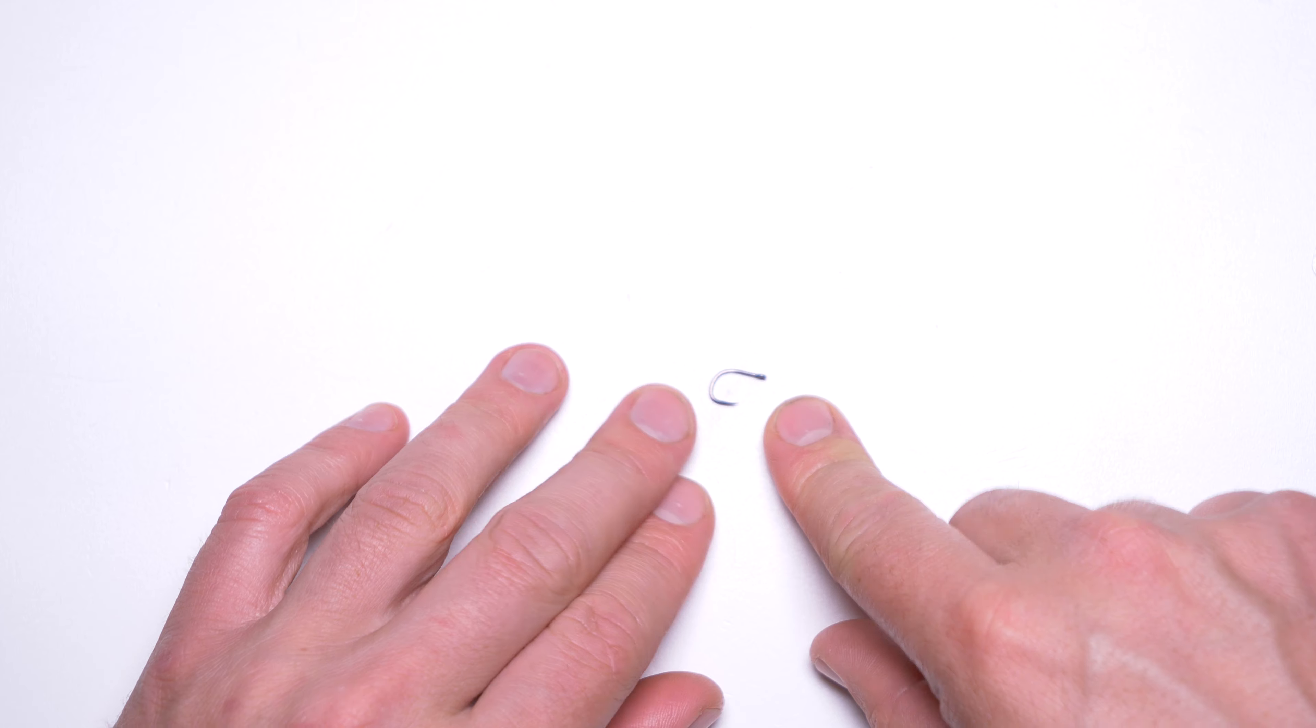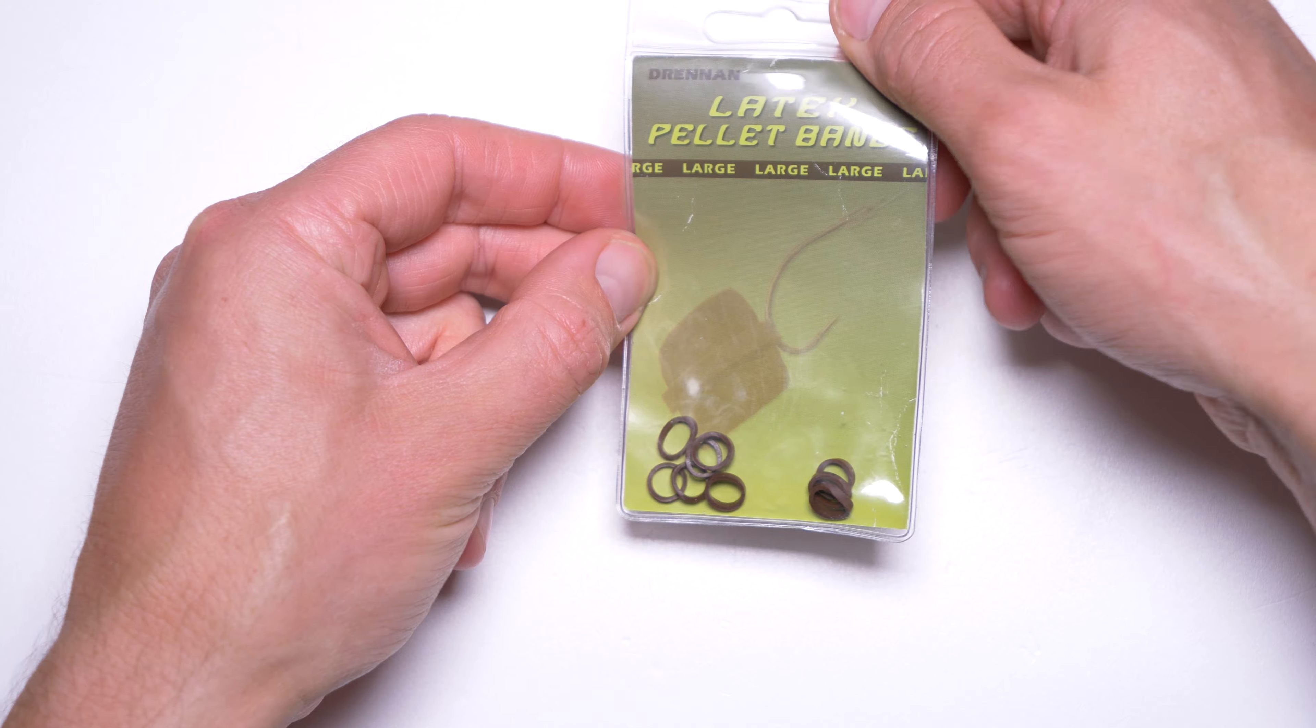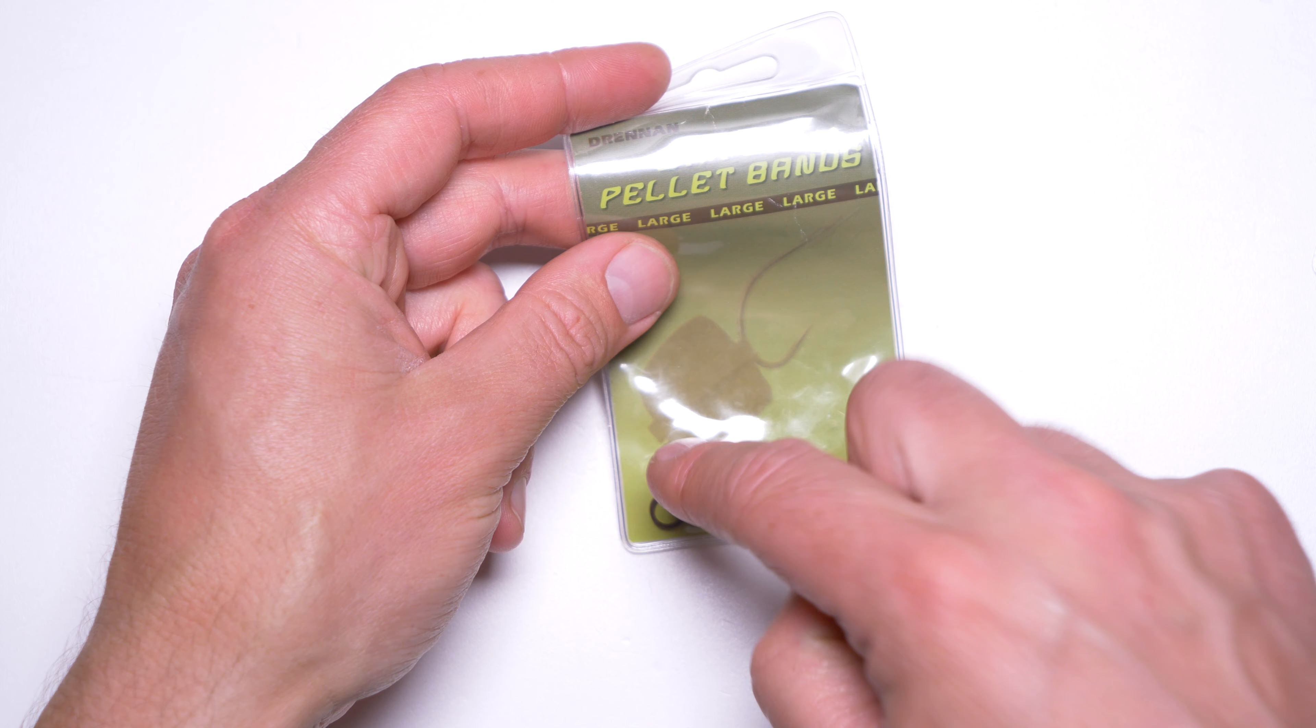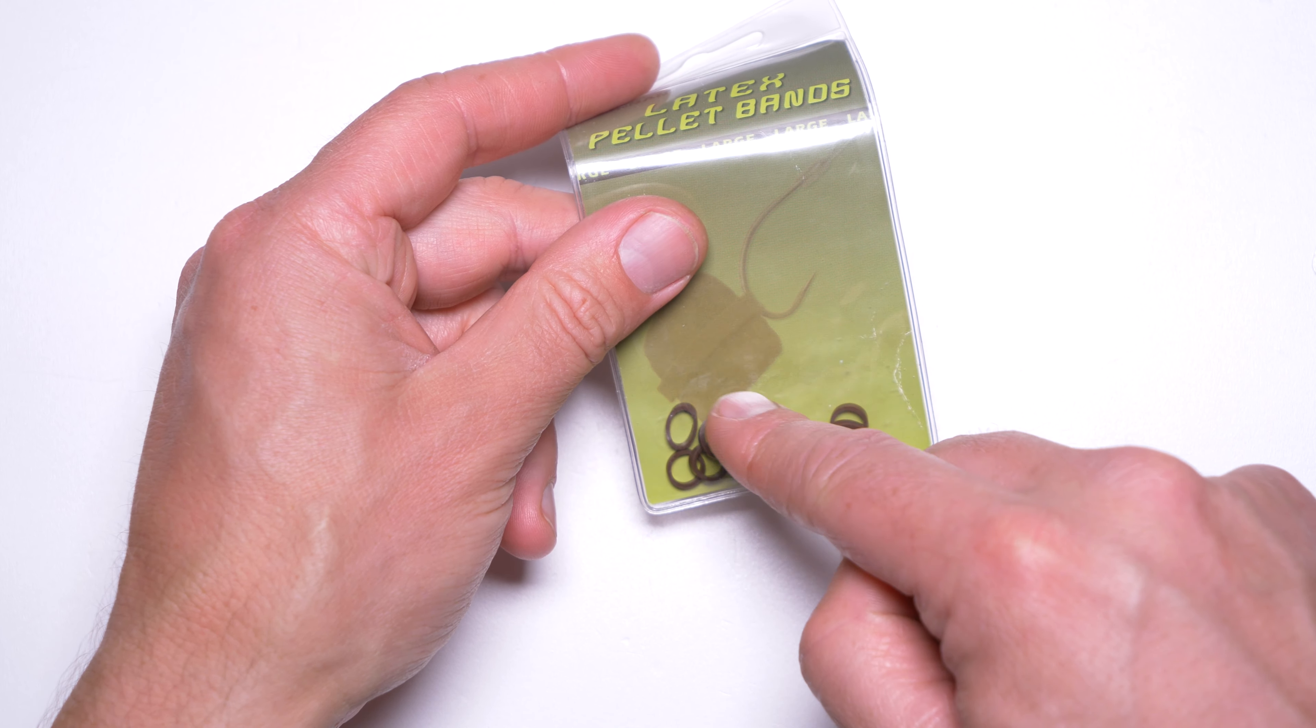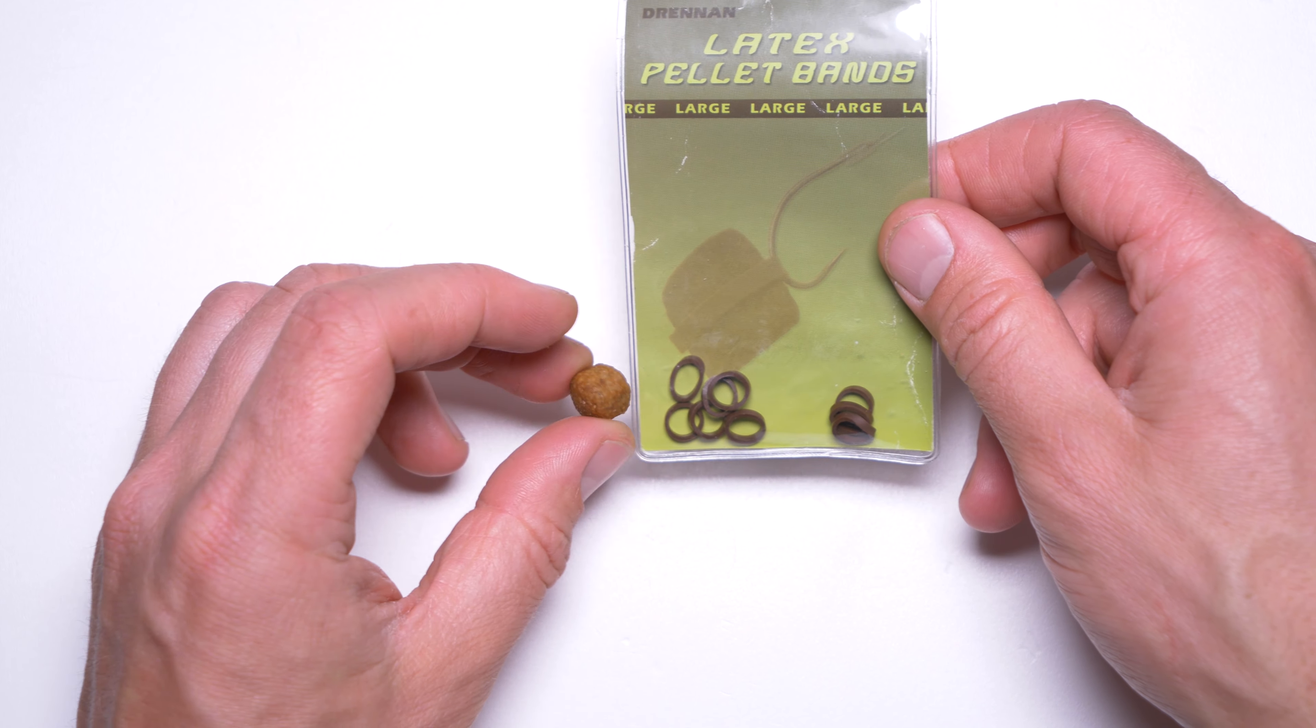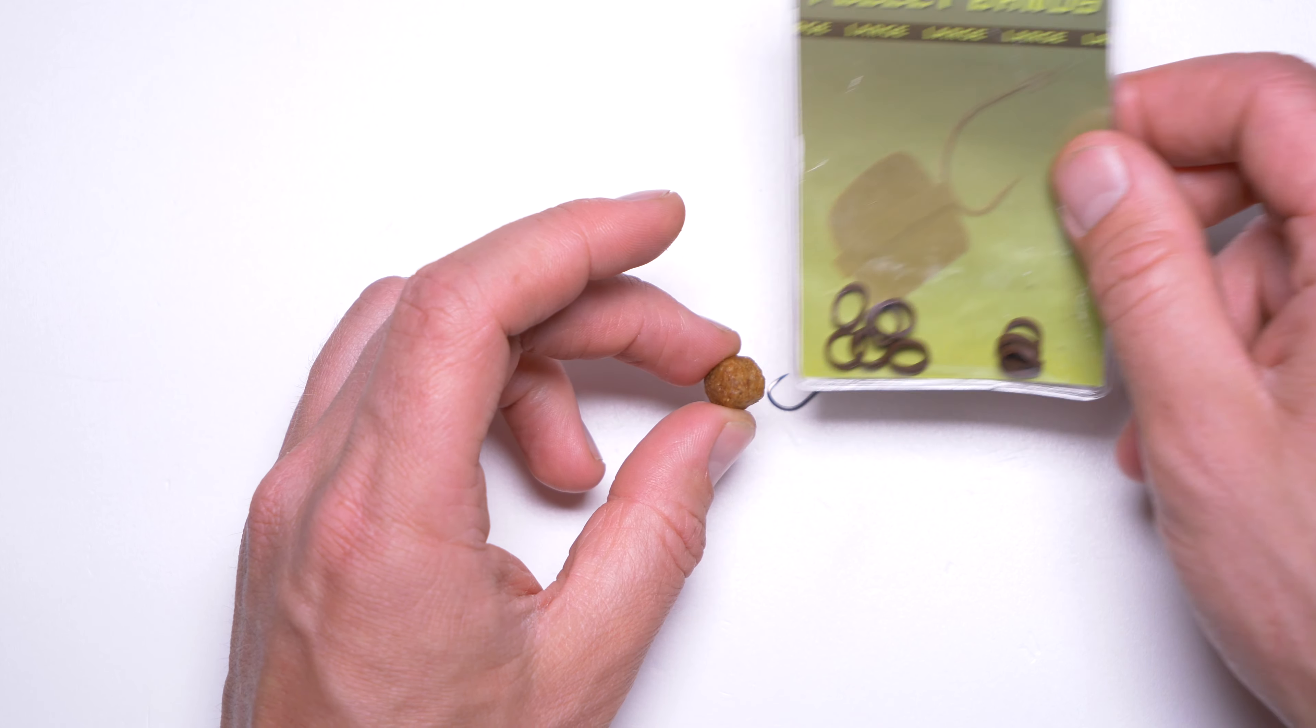Then choose the correct pellet band. There are quite a few, but I discovered that these Drennan latex pellet bands in large size brown hold the pellets best for me. The only problem is they're dark brown, and the pellets and dog biscuits, especially Pedigree mixers, go lighter after a couple minutes in the water. The fresh pellet looks good in the band, but the biscuit changes color as water washes away the color.